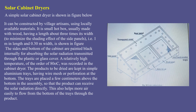Another type is the solar cabinet dryer, which is very simple and easy to design. It can be constructed by village artisans using locally available materials. It is a small hot box, usually made of wood, having a length about three times its width to minimize the shading effect of the side panels — for example, 1 meter in length and 0.3 meter width as shown in the figure. The sides and bottom of the cabinet are painted black internally to absorb maximum solar radiation.